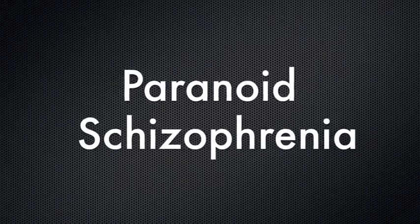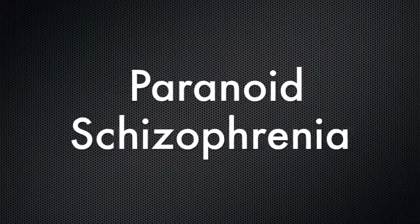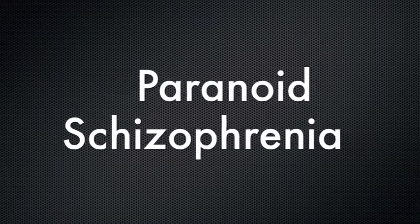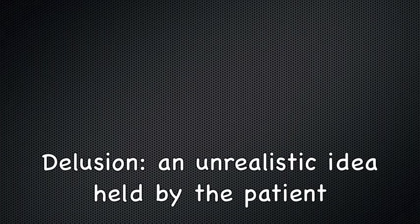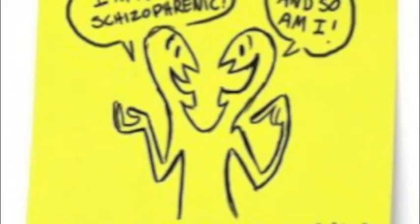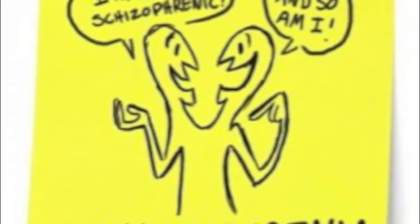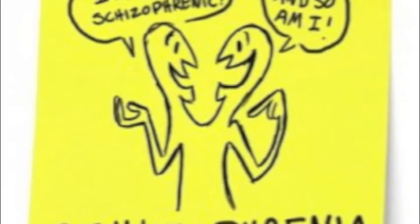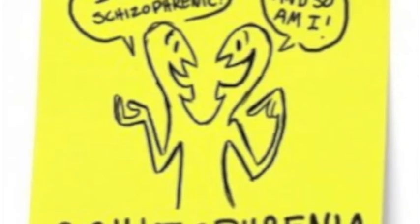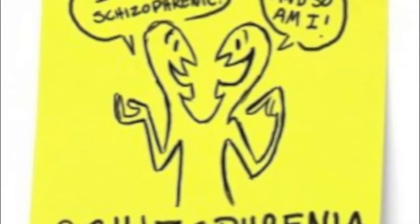Paranoid schizophrenia is characterized by delusions and voices that can only be seen and heard by the patient. A delusion is an unrealistic idea held by the patient — for example, a patient may believe that he or she is an undercover agent for the FBI. Voices often tell the patient to commit some inappropriate act, such as killing another person.